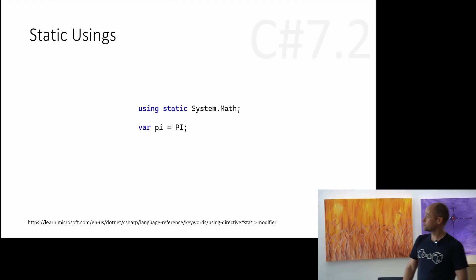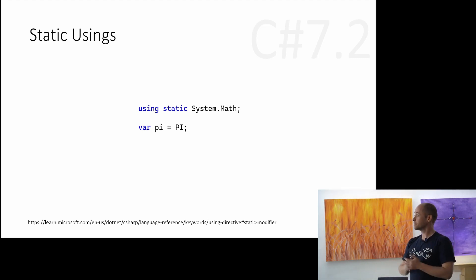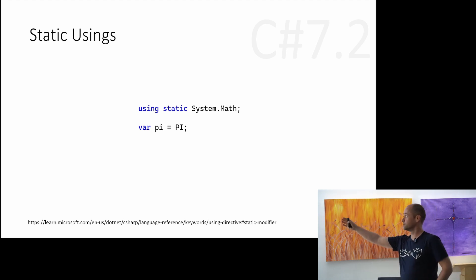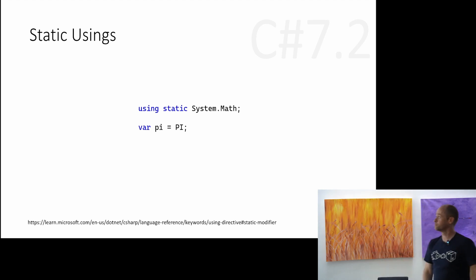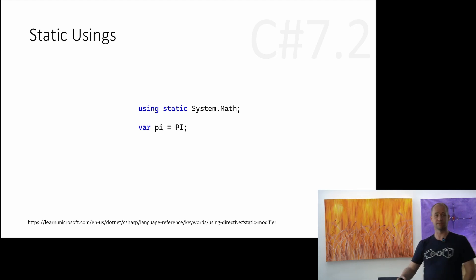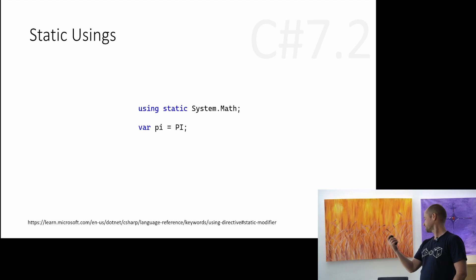As of C# 7.2 there was a restriction lifted — when static usings first came out you couldn't reference constants on that type. As of 7.2 you can. In this example we're using System.Math and now we can reference Pi — you couldn't do that before, but anything after 7.2 you can.